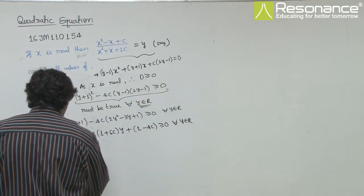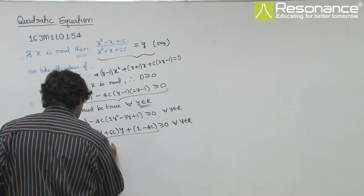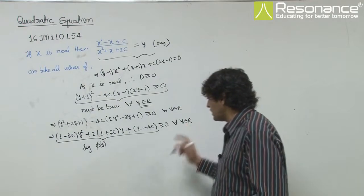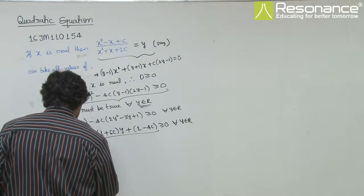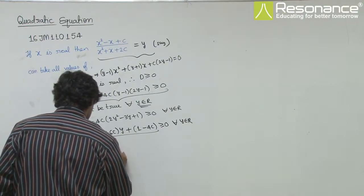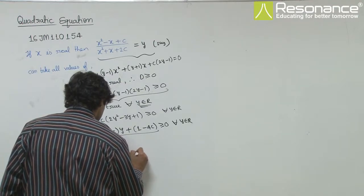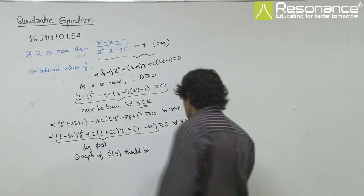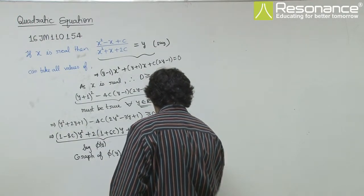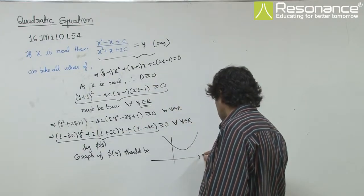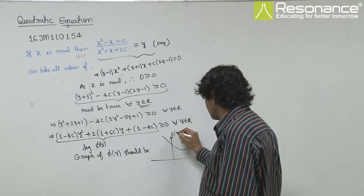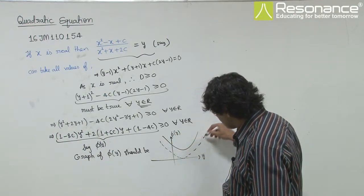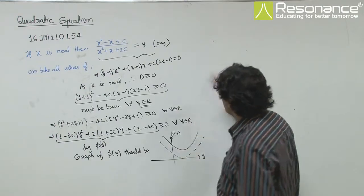That means, if I consider this as a function in y, for this to be true for y belongs to R, this entire expression must be greater than 0. Since y belongs to R, the graph must be completely above the x-axis. Here we have y, and this is f(y). So it must always be positive, and there's also an equal to sign, that means it can touch as well. So the graph should be like this.